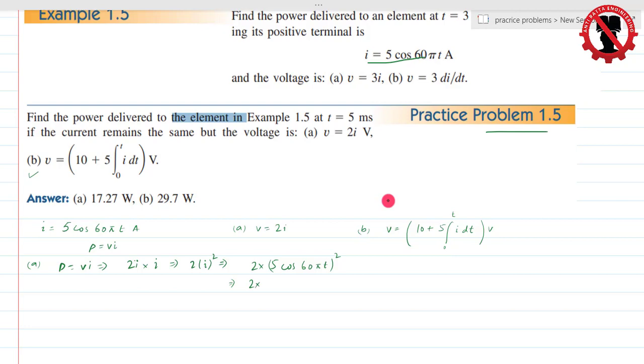So 2 times 5 squared is 25, and cos squared will remain as is. So this gives me 50 times cos of 60 pi t whole squared. Now if you solve this without calculator, you should know that cos squared of theta equals 1 plus cos of 2 theta divided by 2. But we won't follow that method. We'll directly solve this.